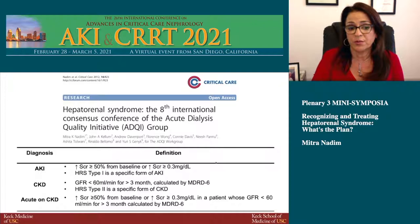We also suggested that HRS type 1 could be a specific form of acute kidney injury. The urine output criteria was not included at this time, as there was no supporting data.